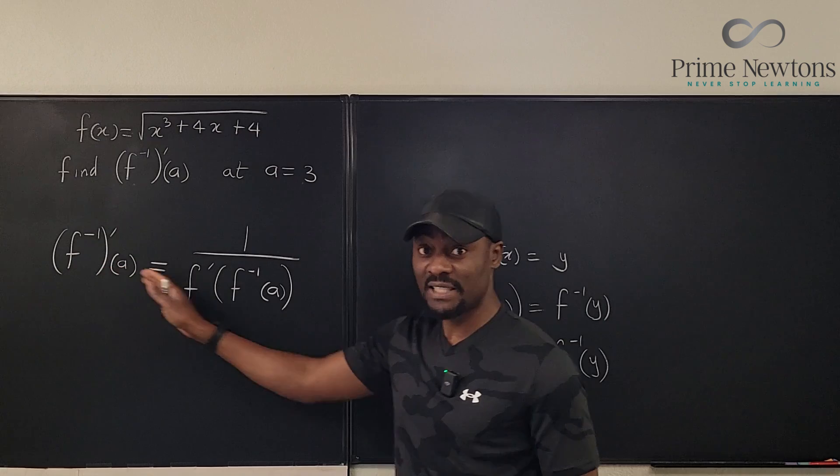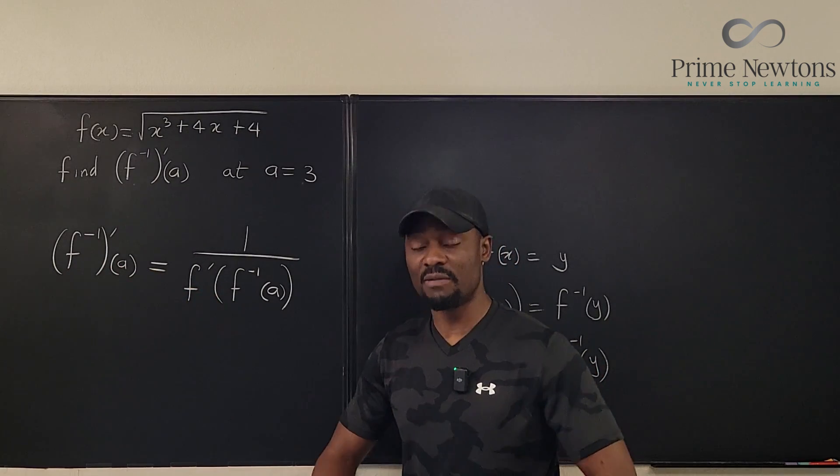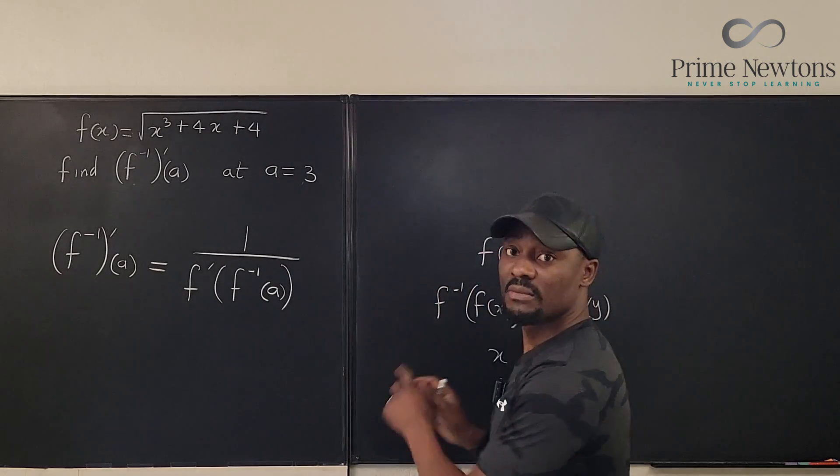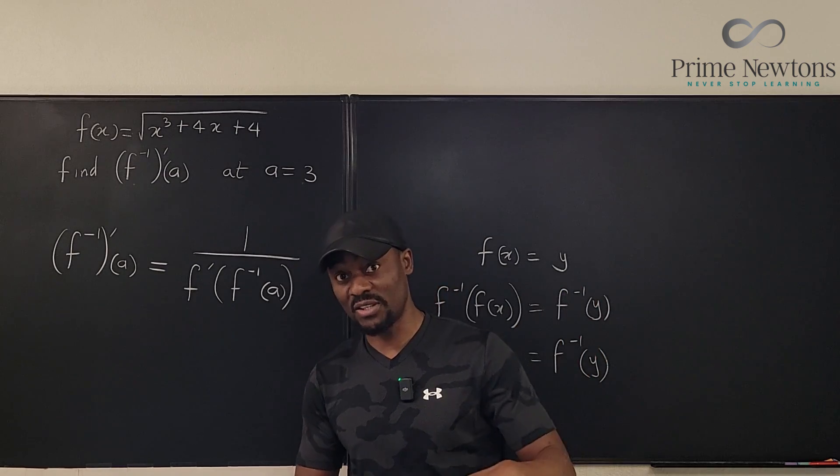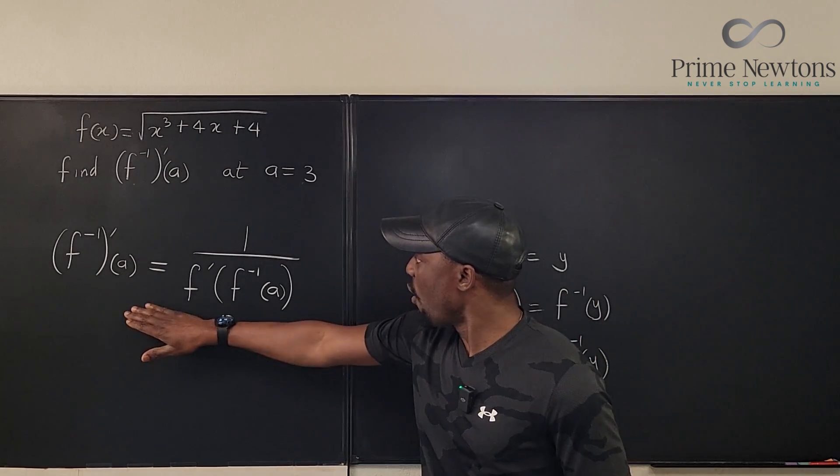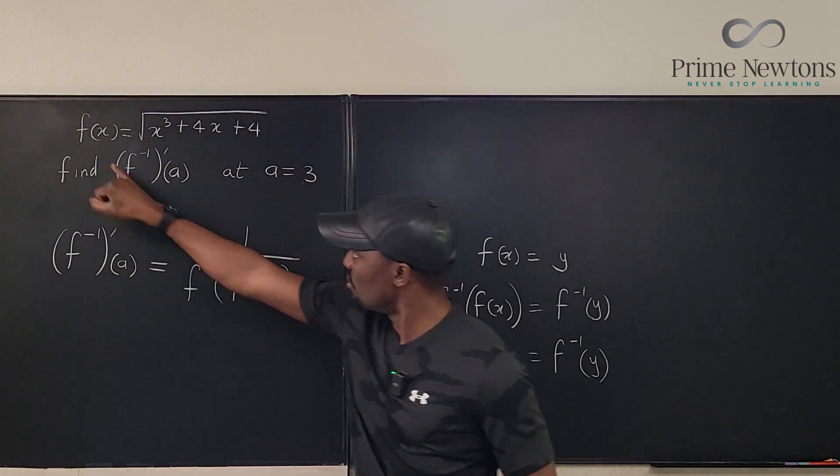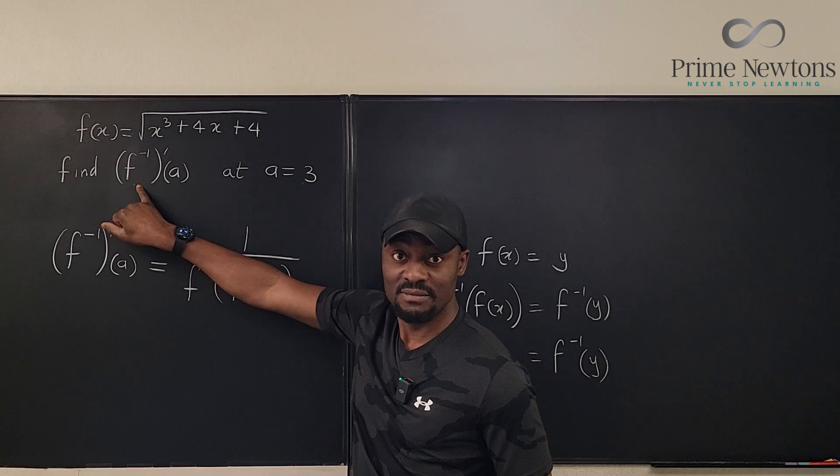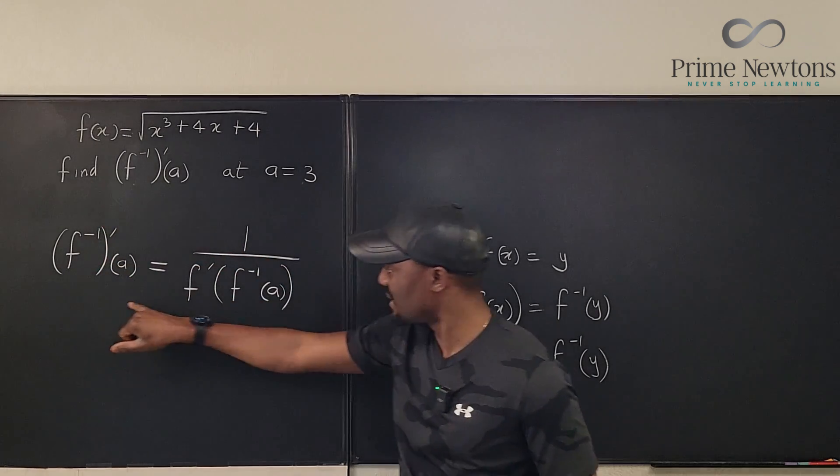So if we say that f of x is equal to y, what did I plug in to f in order to get y? The only way I can get that x back is to plug this y into the inverse function. And we know that this will undo this and you're going to get your x back. So here, all I need is to find this number and I need to find the derivative of f.